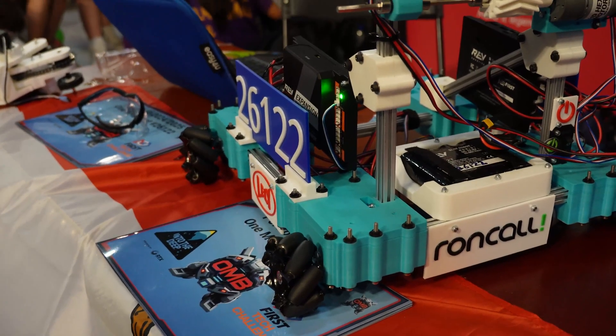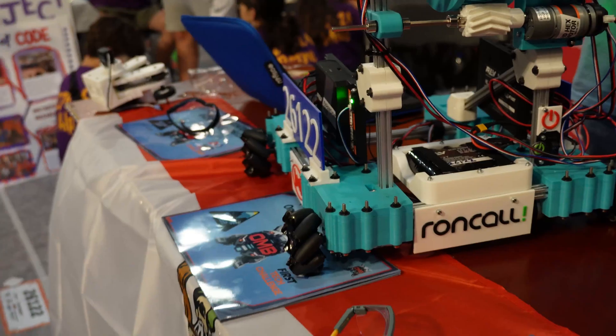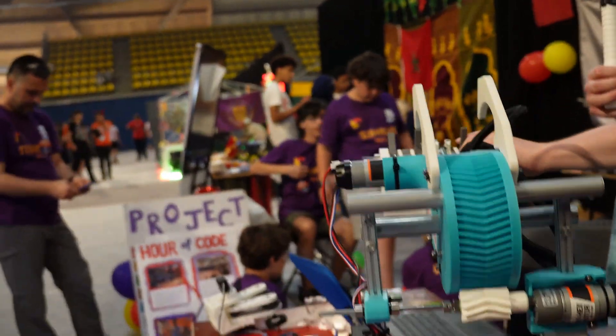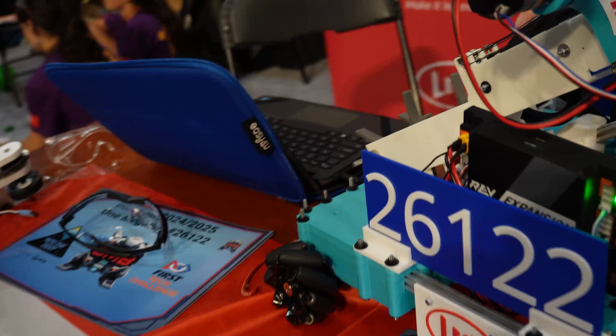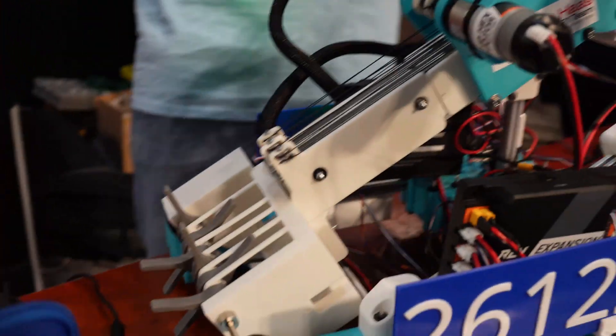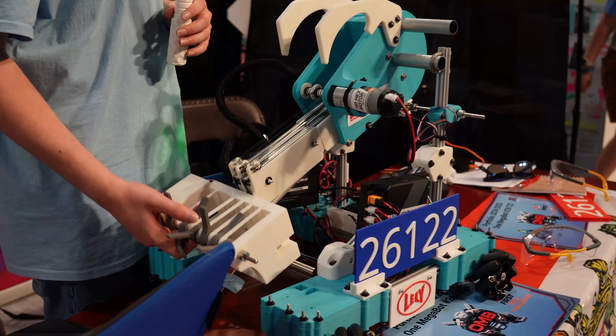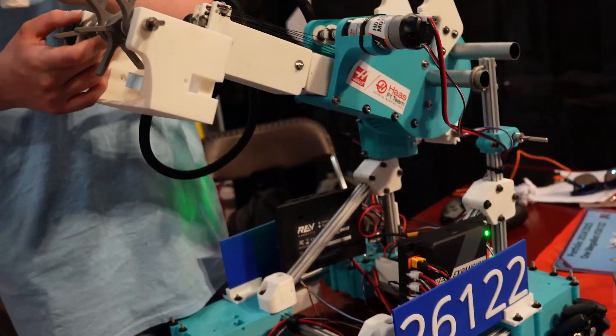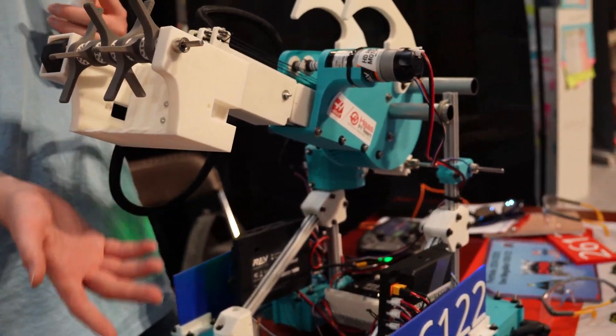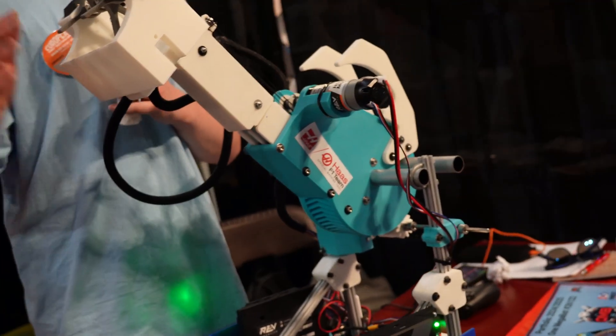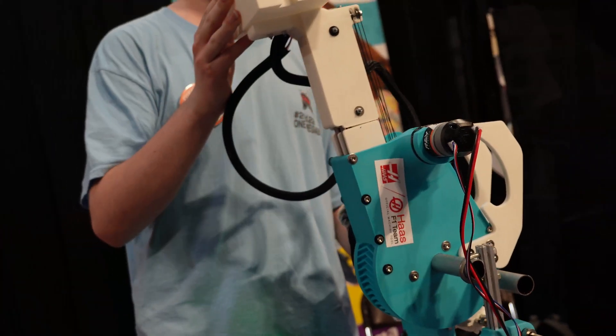Last question then is what kind of driver automations or what kind of programming automations have you put in this to make this simpler? We mainly put a lot of automation into the arm because it's all the different positions. So we put in presets on different buttons on our controller and stuff. So like at this angle. So like tell me an example of a driver or something. So we go for the high basket.